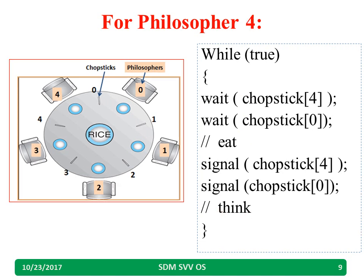Similarly, consider philosopher 4. The fourth philosopher waits for chopstick 4 and chopstick 0. Once finished eating, he puts chopstick 4 and chopstick 0 back and starts thinking again.